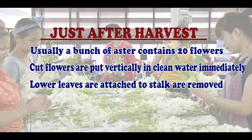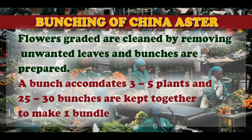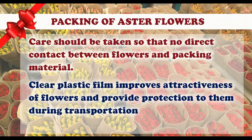Usually a bunch of Aster contains 20 flowers. After harvest, cut flowers are put vertically in clean water immediately. Then lower leaves attached to the stalk are removed. Grading of China Aster can be done according to stalk length, size and shape of flowers, and freshness. Graded flowers are cleaned by removing unwanted leaves and bunches are prepared. A bunch accommodates 3 to 5 plants and 25 to 30 bunches are kept together to make one bundle. During packing, care should be taken so that there is no direct contact between flowers and packing material. Clear plastic film improves attractiveness of flowers and provides protection during transportation.